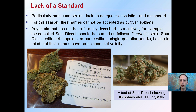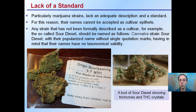Any strain that has not been formally described as a cultivar — for example, the so-called 'Sour Diesel' — should be named as follows: the cannabis strain Sour Diesel, with the popularized name without single quotation marks, having in mind that such names have no taxonomical validity. Just because Sour Diesel is a very common high-THC form of cannabis, particularly on the East Coast, the name is tossed around without true taxonomical grounding. Here you can see a bud of Sour Diesel and a bud of Argo Blackberry — these names are out there and used, but aren't really scientifically backed.